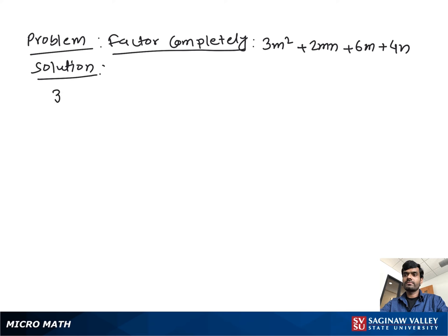Factor completely 3m² + 2mn + 6m + 4n. As you see, there is no common factor shared and there are no like terms you can add or subtract. In this condition, we do it by grouping.